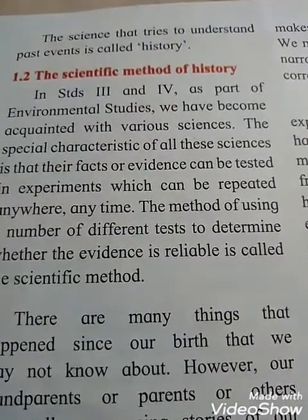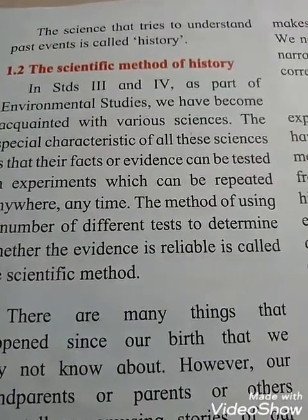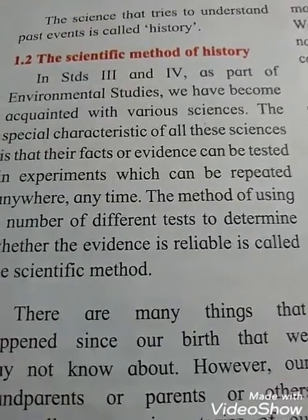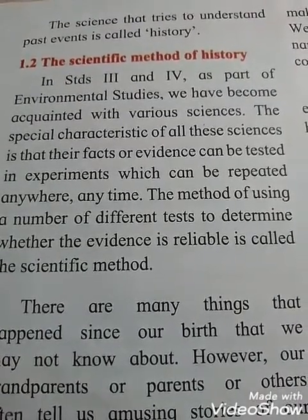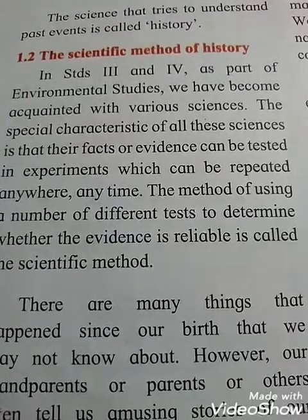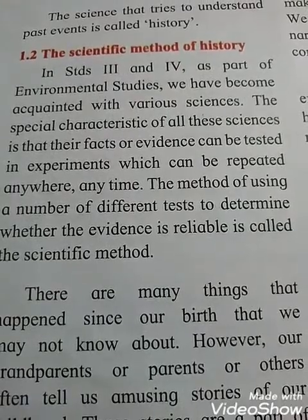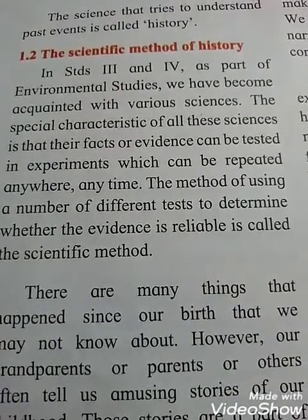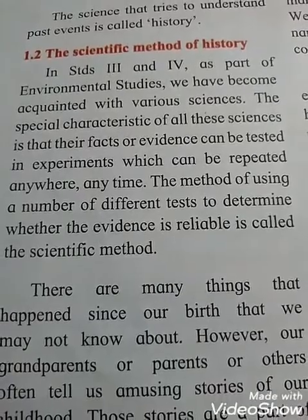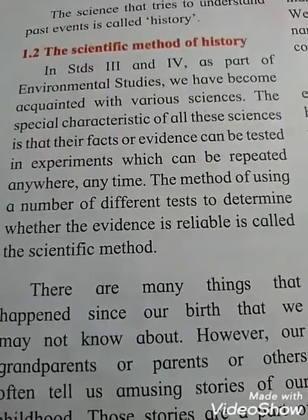The science that tries to understand past events is called history. Section 1.2 — The scientific method of history. In Standard 3 and 4 as part of environmental studies, we became acquainted with various sciences. Their facts or evidence — meaning proof — can be tested in experiments which can be repeated anywhere, anytime. The method of using a number of different tests to determine whether the evidence is reliable is called a scientific method.